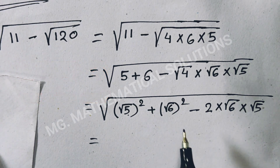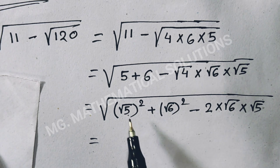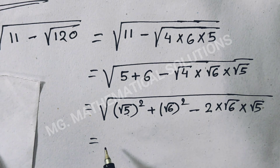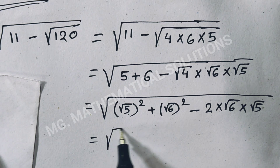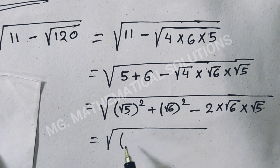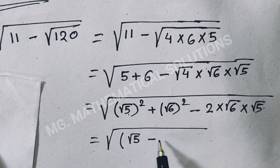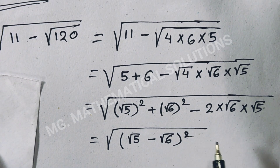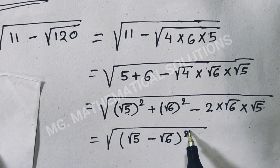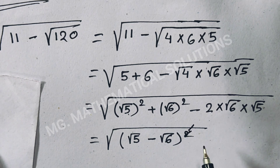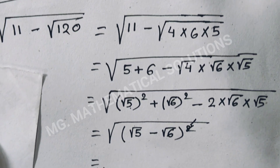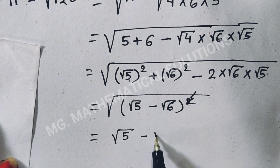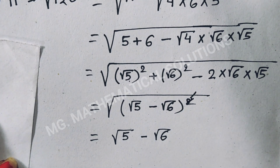Here a means root 5 and b means root 6, so we have root under (root 5 minus root 6) whole square. Now the square and root cancel, so this term becomes root 5 minus root 6.